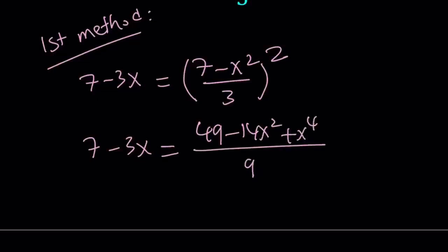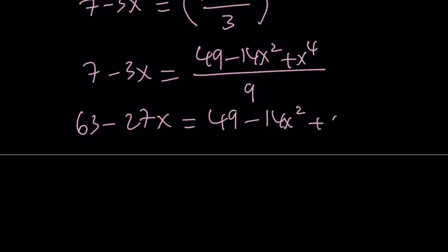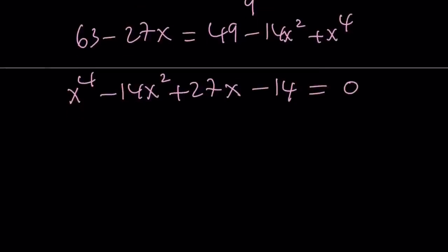The top is basically a minus b quantity squared. Let's go ahead and cross-multiply this. 63 minus 27x equals 49 minus 14x squared plus x to the fourth. If I put everything on the same side, it's going to be a quartic equation, which means fourth degree. x to the fourth minus 14x squared plus 27x minus 14. That's going to be our quartic.